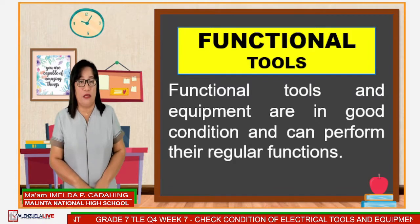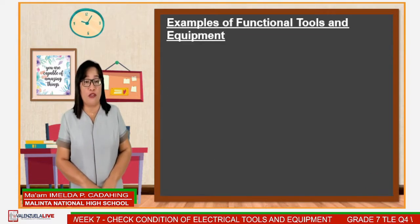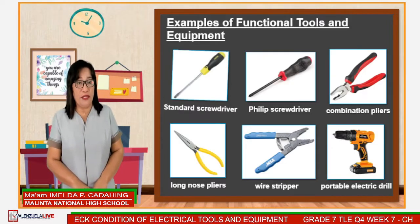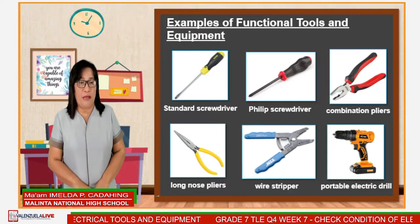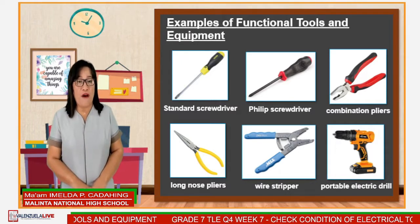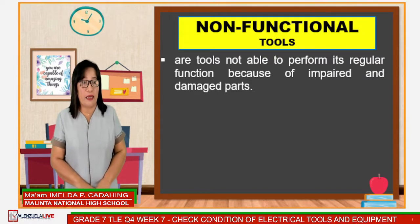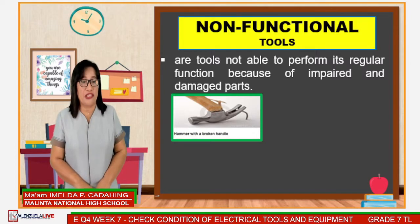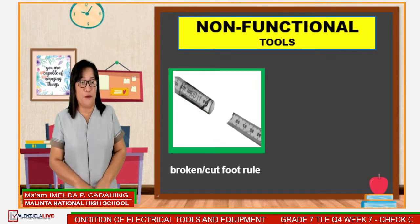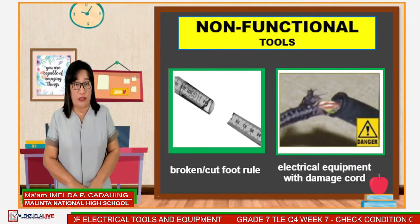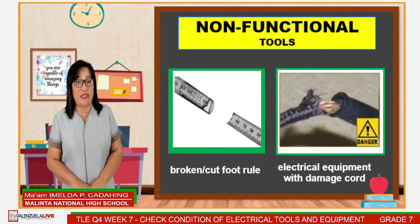Functional tools and equipment are in good condition and can perform their regular functions well. Here are some examples of functional tools and equipment: standard screwdriver, Phillips screwdriver, combination pliers, long-nose pliers, wire stripper, and portable drill. Non-functional tools are tools that are not able to perform their regular function because of impaired and damaged parts, like a broken hammer handle, screwdriver with a broken handle, long-nose pliers with damaged nose, cap and broken edge of foot rule, and electrical equipment with damaged cords. Since it is important to know the functional conditions of electrical tools and equipment, we should know the different ways of identifying them.